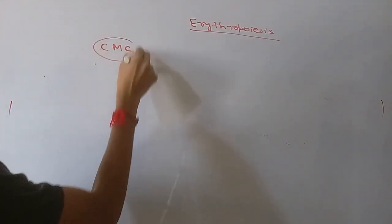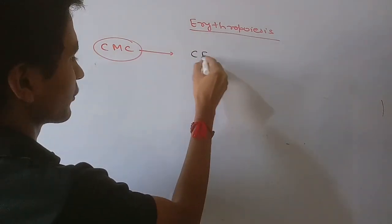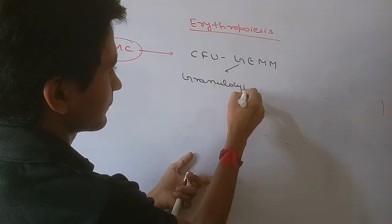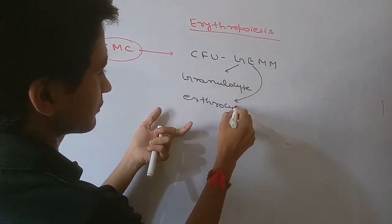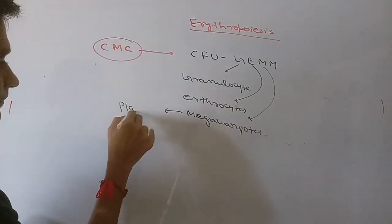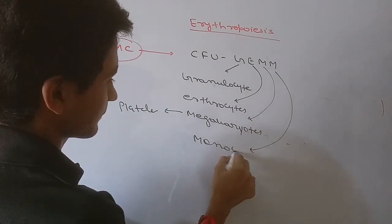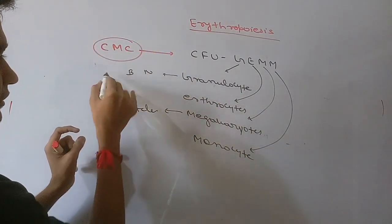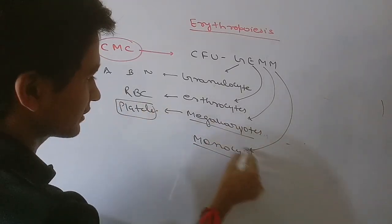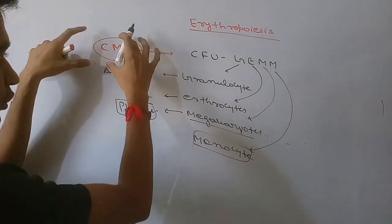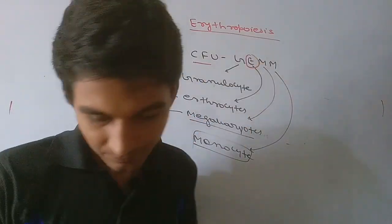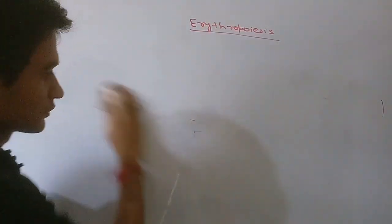The committed myeloid cell will divide and form the Colony Forming Unit GEMM — G for granulocytes, E for erythrocytes, M for megakaryocytes, and M for monocytes. Granulocytes form neutrophils and basophils; erythrocytes form RBC; megakaryocytes form platelets; and monocytes are also formed by the colony forming unit GEMM.